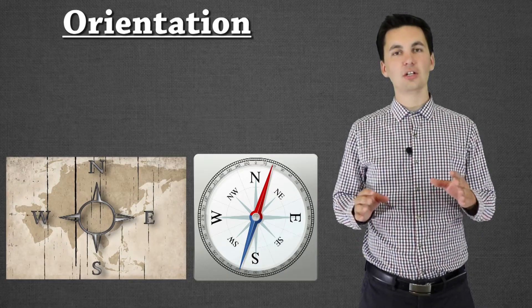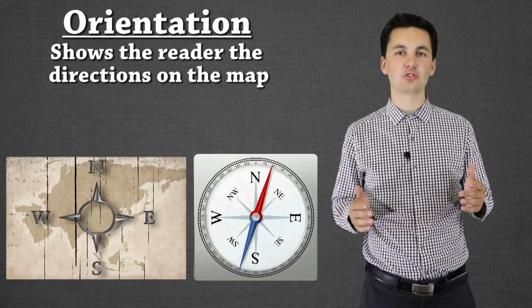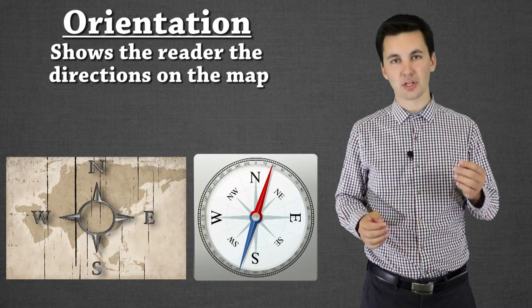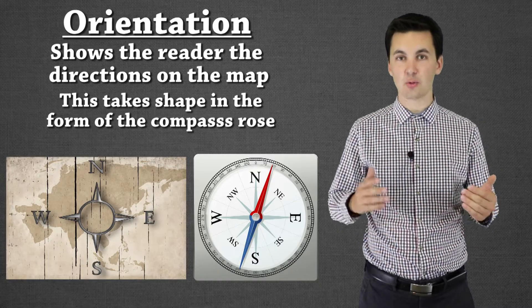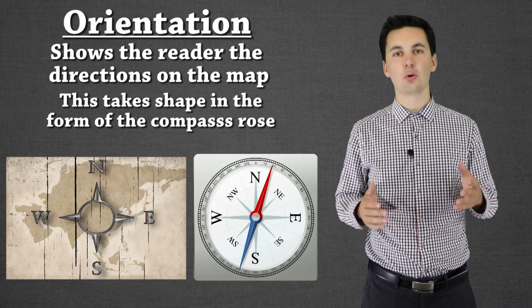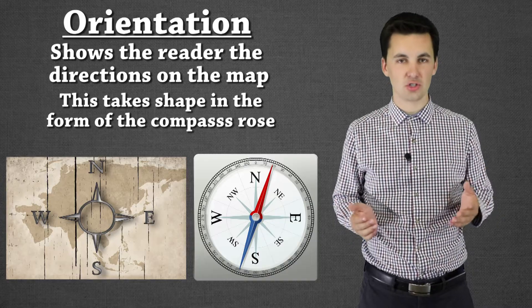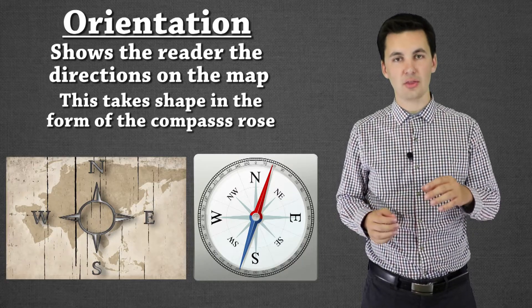The next part of TODALS is orientation. Orientation is going to help us with the directions. This helps the reader understand exactly what's going on. With orientation we're going to have the compass rose. This is where we'll be able to see where's north, where's south, where's east, where's west. This is normally how we're able to tell the orientation of the map, so we know exactly what direction is what on the map.